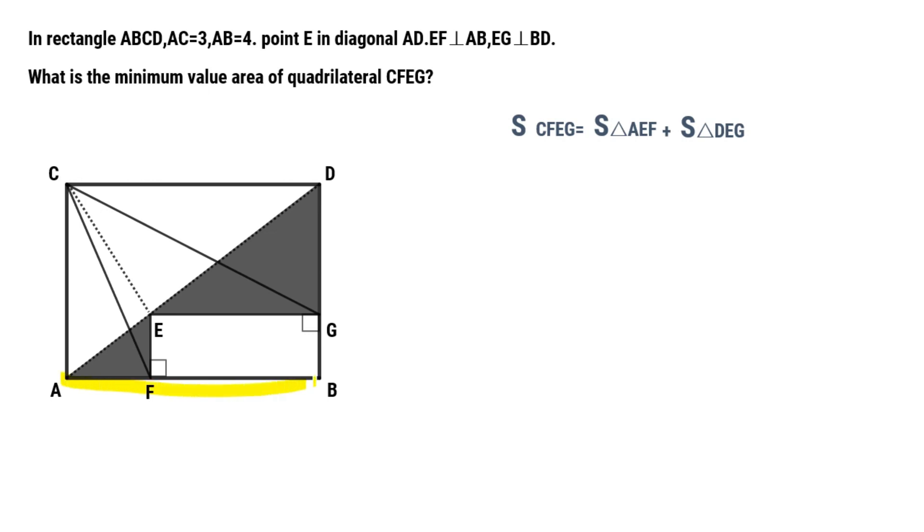Let's focus on triangle ABD. Area of triangle ABD minus area of rectangle EFBG equals triangle AEF plus DG.